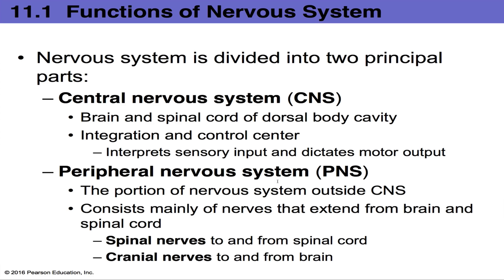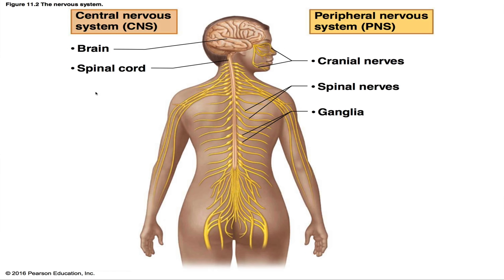The Peripheral Nervous System (PNS) is everything outside the central nervous system — to the periphery of the mid-axis of the body. It consists mainly of nerves extending from the brain and spinal cord: 12 pairs of cranial nerves and 31 pairs of spinal nerves. The CNS is in the mid-axis of the body with the brain and spinal cord, while the PNS branches out to the sides with the cranial and spinal nerves.